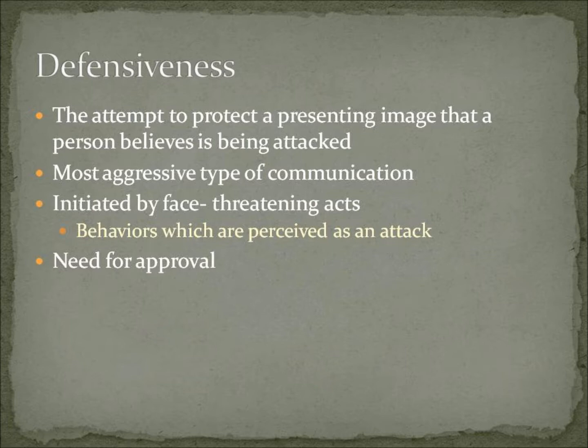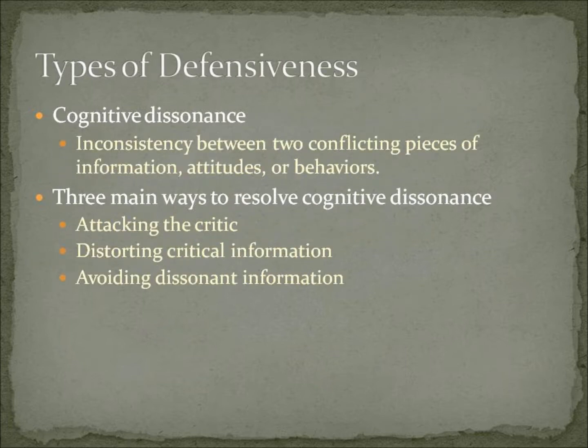Reasons for our defensiveness are mostly based on our needs for approval. Psychologists call defensiveness in a conversation cognitive dissonance, which is an inconsistency between two conflicting pieces of information, attitudes, or behaviors. There are three broad ways to resolve dissonance without agreeing with a critic: attacking the critic, distorting critical information, and avoiding dissonant information.